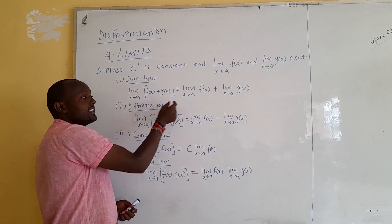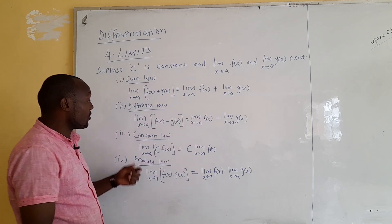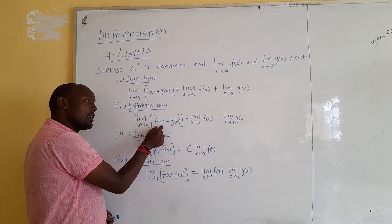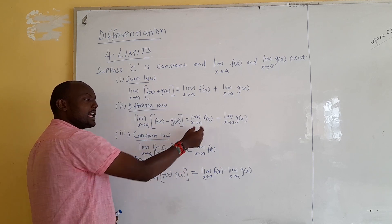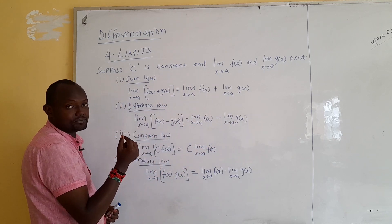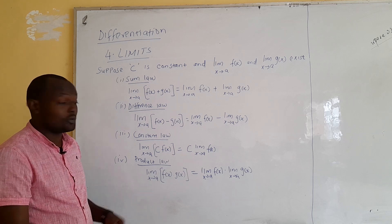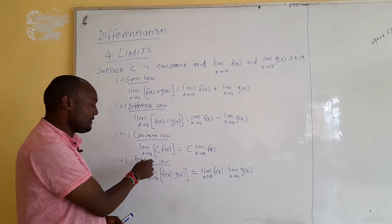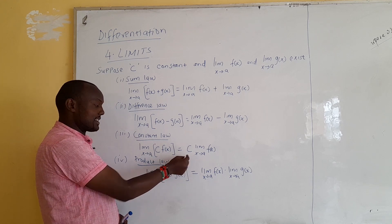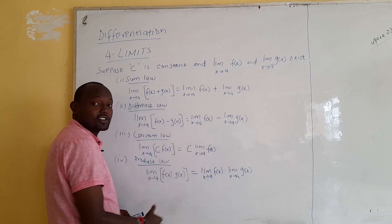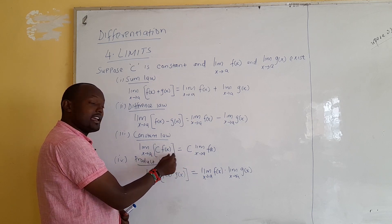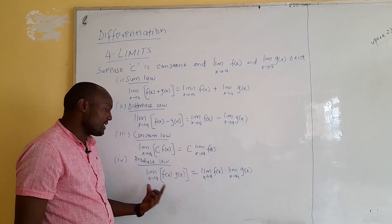The same case will happen with the difference law. If you have a minus sign — limit of f(x) minus g(x) — you can split them: limit as x approaches a of f(x) minus the limit of g(x). When it comes to the constant multiple rule, you treat the constant the way it is. If you have the limit of a constant times a function, you remove c, hold c constant, and let the limit apply only to the function f(x).